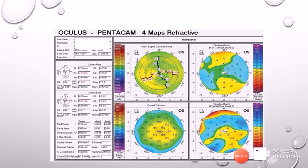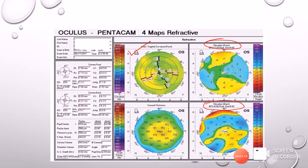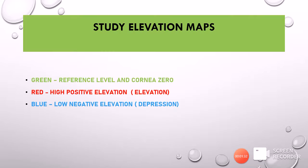Now let us talk about the elevation maps. We have the anterior elevation map and the posterior elevation map. These are corneal curvature maps based on a certain reference shape, which could be a best fit sphere or a best fit toric ellipsoid. For detailed explanation on these elevation maps, refer to part 2 on topography.